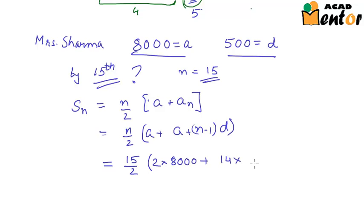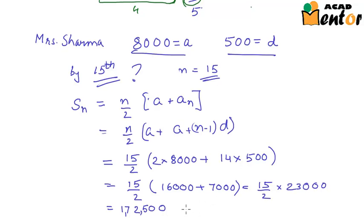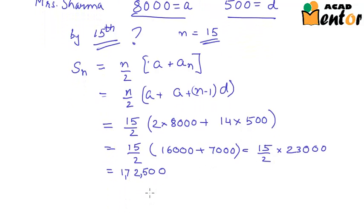This gives us 15 by 2 into 16000 plus 7000 or 15 by 2 multiplied by 23000, which is equal to 172500. Now this is the amount of charity Mrs. Sharma would have done by the end of 15th year.